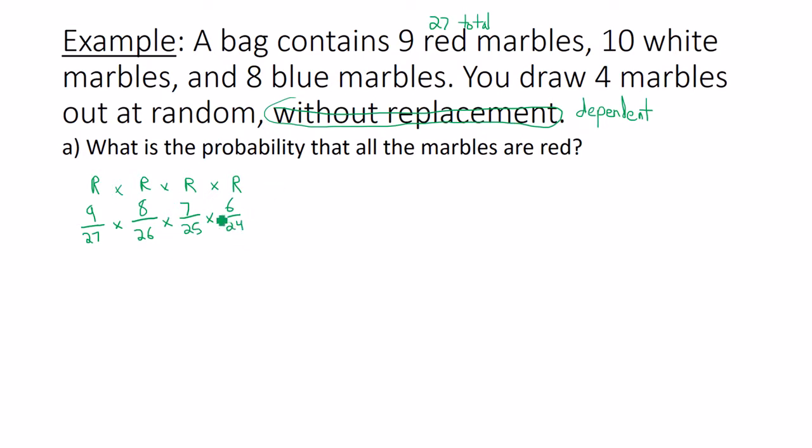Now you can choose to multiply all of these together. Multiply the tops together, multiply bottoms together, or you can go ahead and simplify the fractions. 9 over 27 becomes 1 third. Why? Because you divide the top and bottom both by 9. 8 over 26 becomes 4 over 13. 7 over 25 cannot be simplified. And 6 over 24, you divide the top and bottom both by 6 to get 1 fourth.